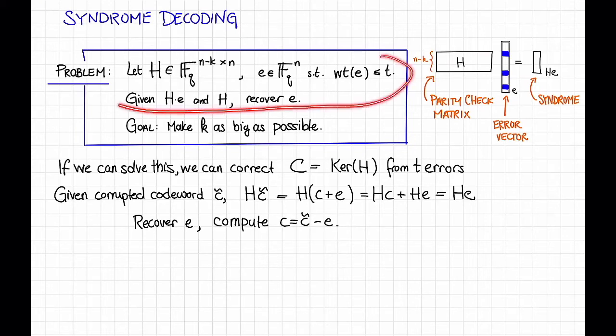Thus, this part of the problem will make us able to decode the code C from T errors, and this goal is saying that we want the dimension to be as big as possible, aka we want the rate to be as big as possible. So this is the same thing that we've always been looking for. Okay, so that's the syndrome decoding problem.